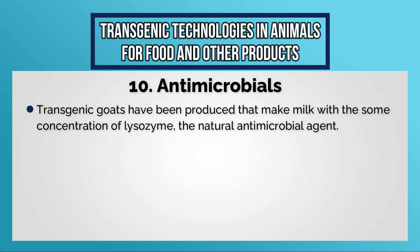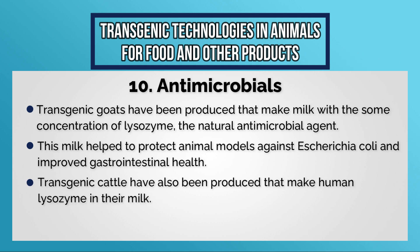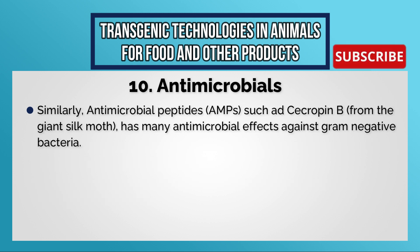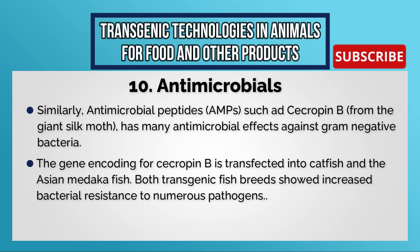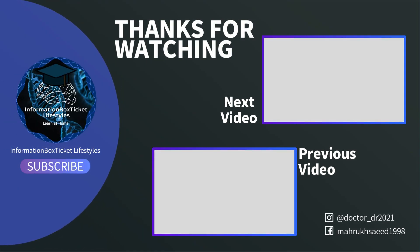Antimicrobials: transgenic goats have been produced that make milk with a concentration of lysozyme, a natural antimicrobial agent. This milk helps protect animal models against Escherichia coli and improve gastrointestinal health. Transgenic cattle have also been produced that make human lysozyme in their milk. Similarly, the antimicrobial peptide cecropin B from the giant silk moth has many antimicrobial effects against gram-negative bacteria. The gene encoding for cecropin B has been transfected into catfish and the Asian medaka fish, and both transgenic fish breeds show increased bacterial resistance to numerous pathogens.